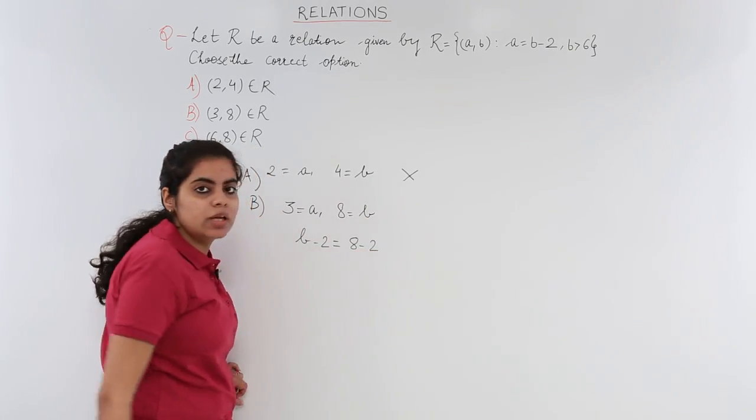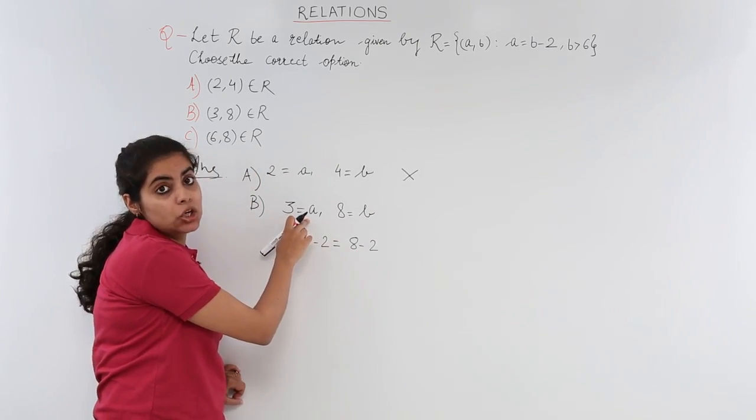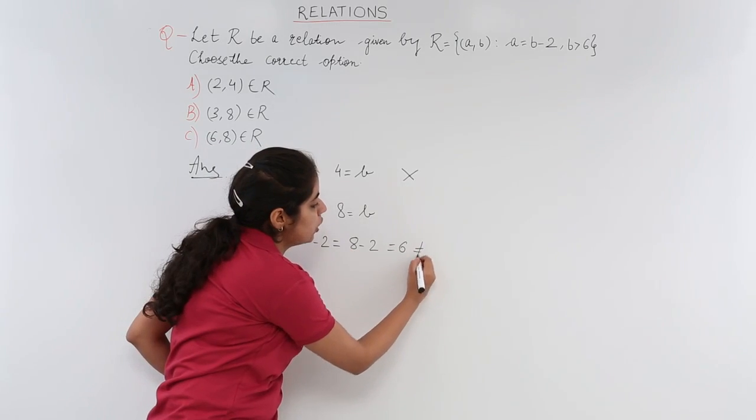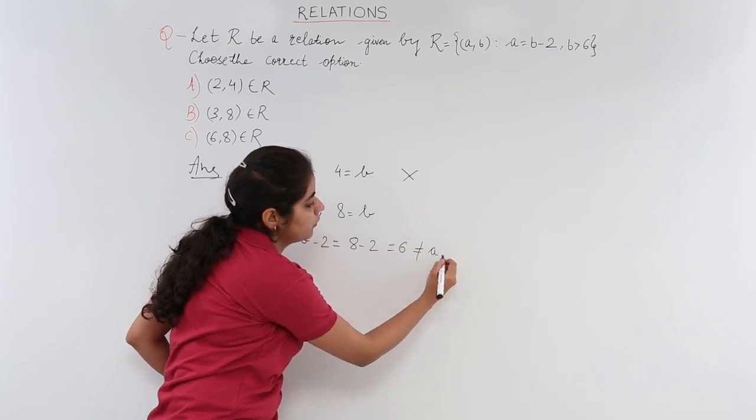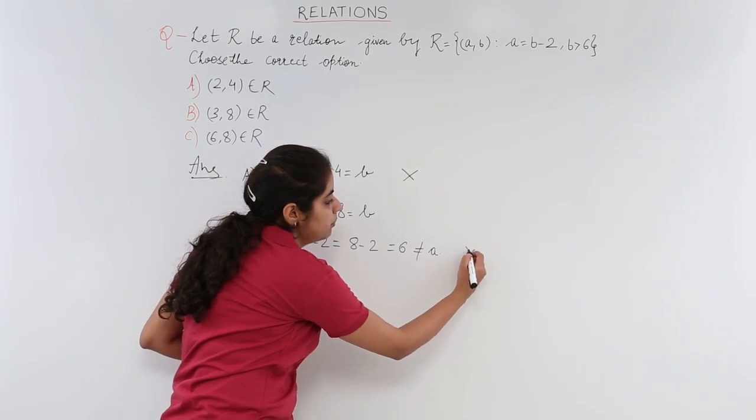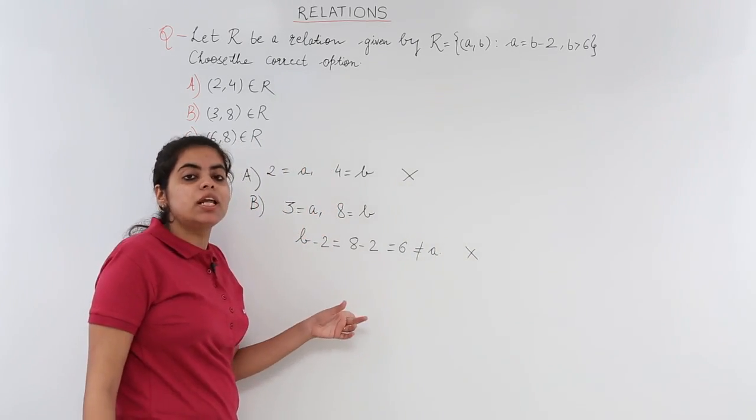Is 8 minus 2 equal to a? No, 8 minus 2 is equal to 6, which is not equal to a. Hence even option B is incorrect, so option B is not the relation.